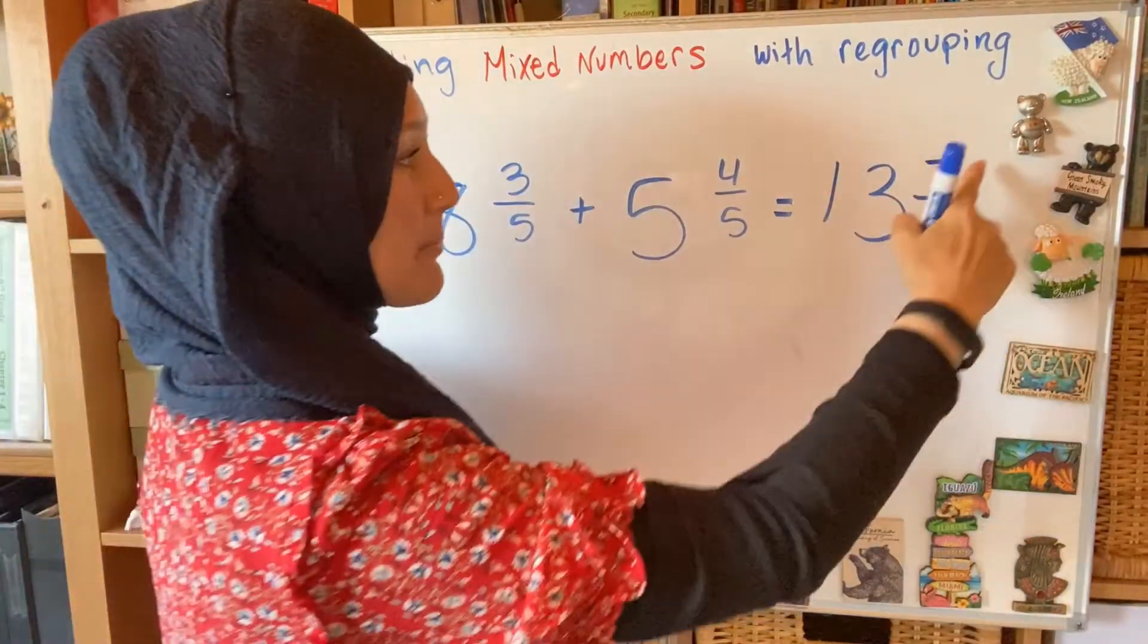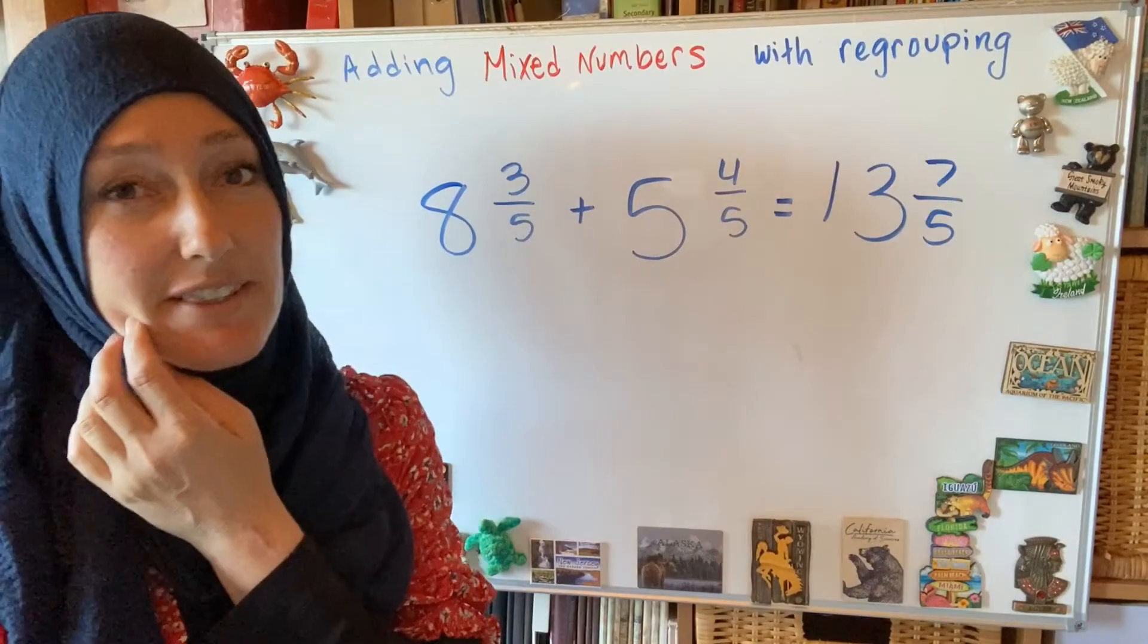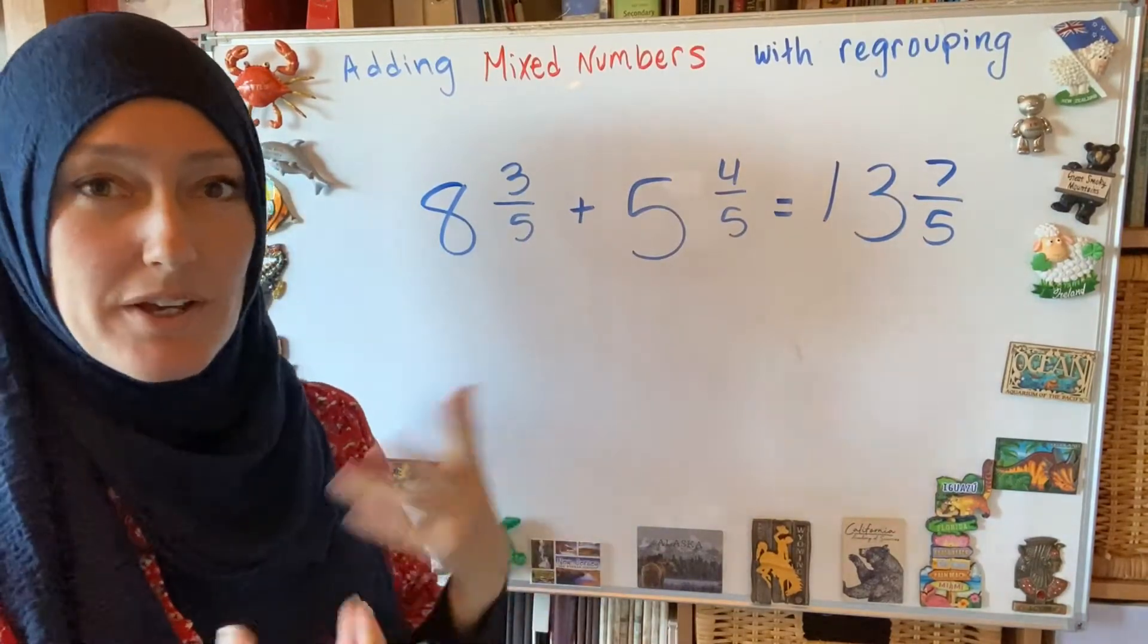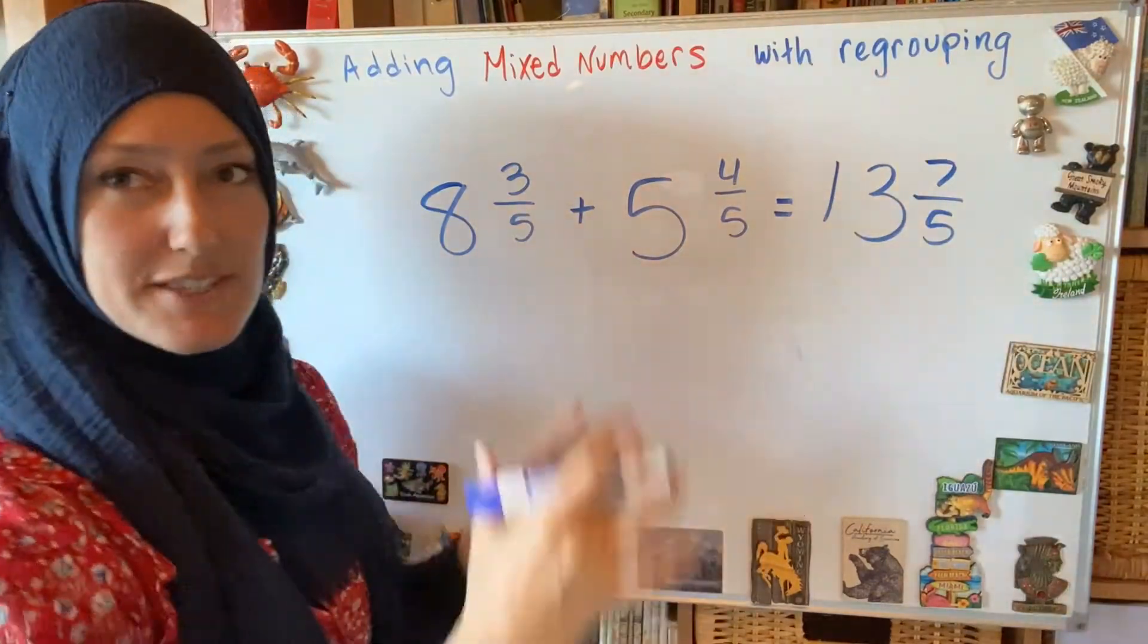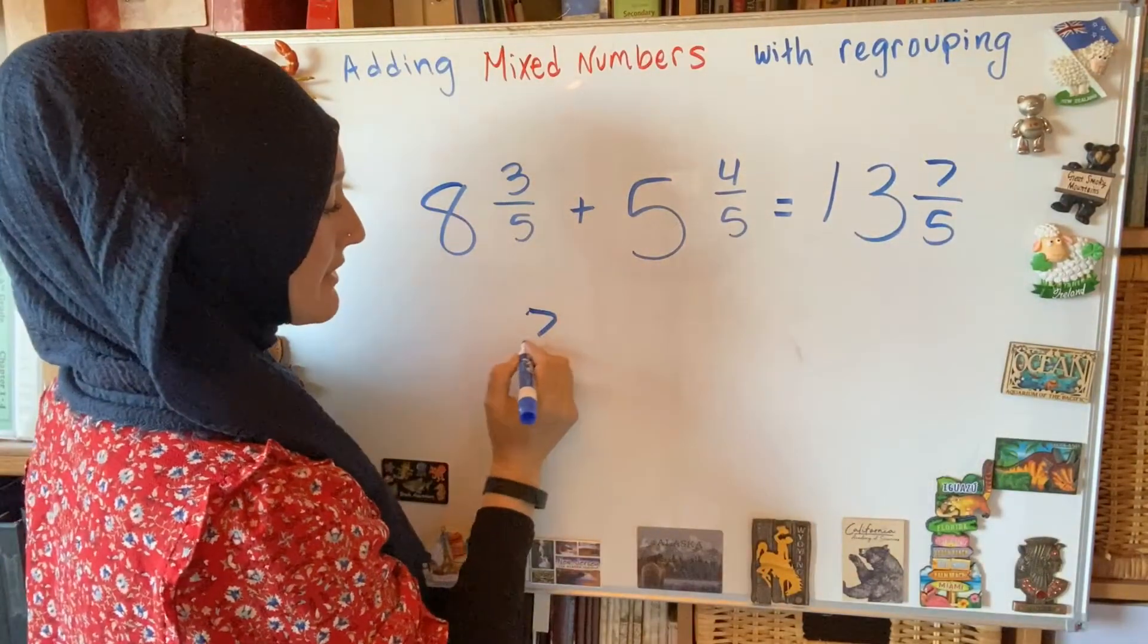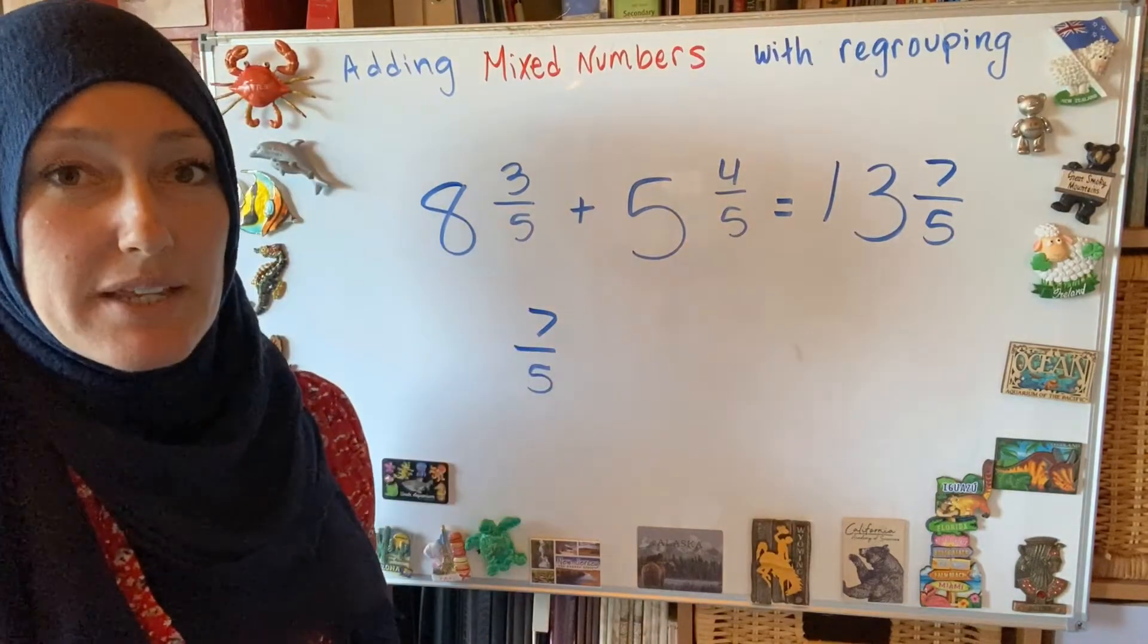Here's where you want to check. Is it possible to have an improper fraction with a mixed number? No, we can't leave it that way. We always want to turn it back into a proper mixed number at the end. This 7 fifths, let me pull that aside just for a second. 7 fifths. I can't have that. I need to make it into a mixed number.